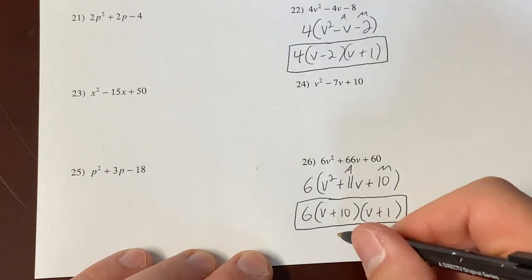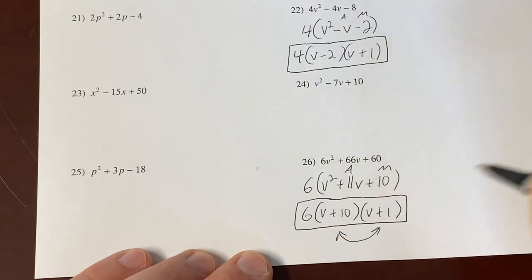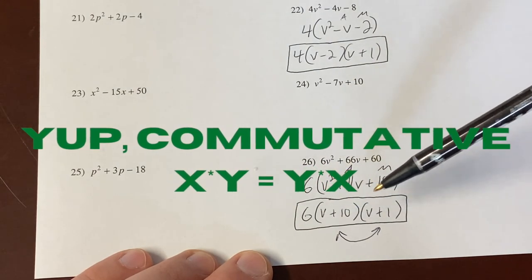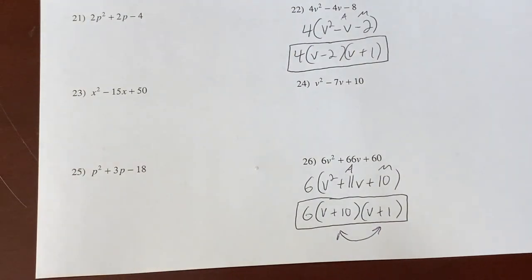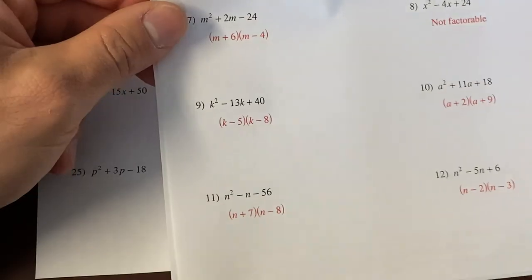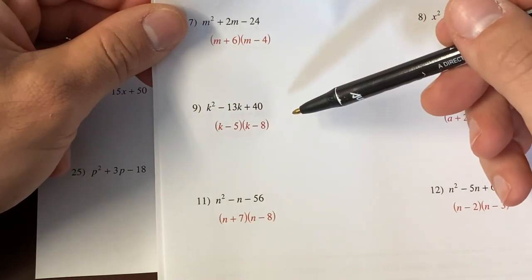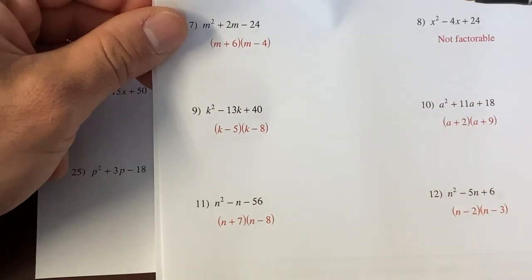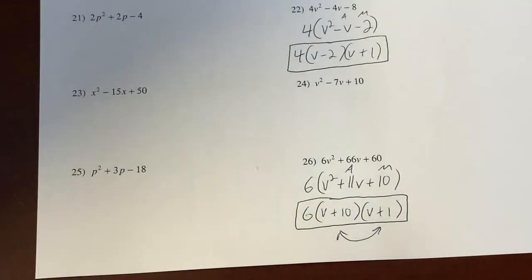Remember, one final thing. It doesn't matter where you have those two factors. You're multiplying. The order of the factors is not important. That's called the commutative property, I think. So if you had v plus 1, v plus 10, that's the same answer. And the reason why I mentioned that is because you're going to get this answer sheet. And when you check your answers, if you have k minus 8, k minus 5, you have the same answer as them. Even though they wrote it minus 5, minus 8. It doesn't matter in what order you write the factors.